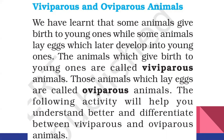We learned about external and internal fertilization. Some animals give birth to young ones — for example, human beings, cow, buffalo, etc. Some animals lay eggs — usually birds, lizard, crocodile, snake, etc. — and from the eggs, the young ones are developed. The animals which give birth to young ones are called viviparous animals, and those which lay eggs are called oviparous animals.